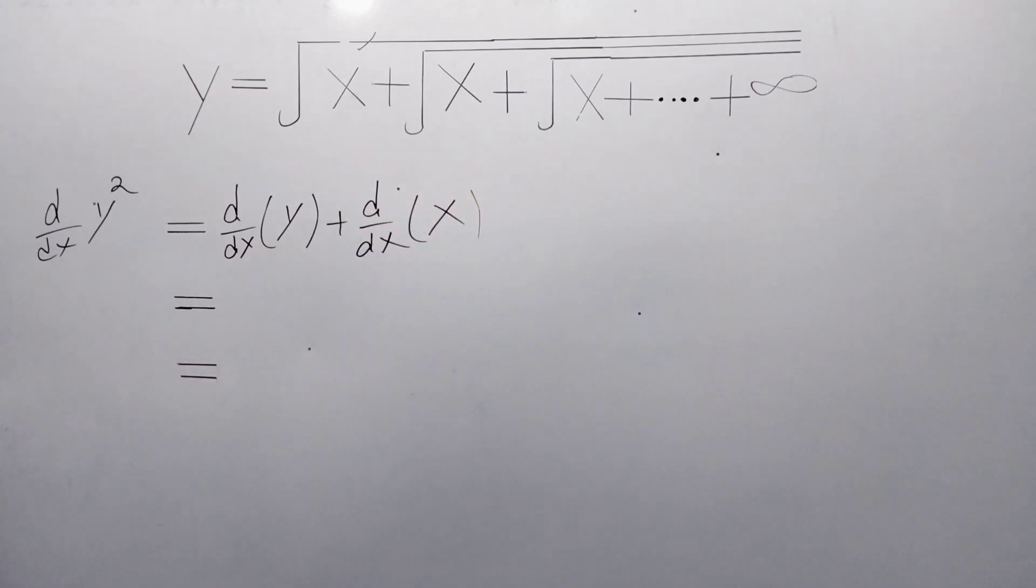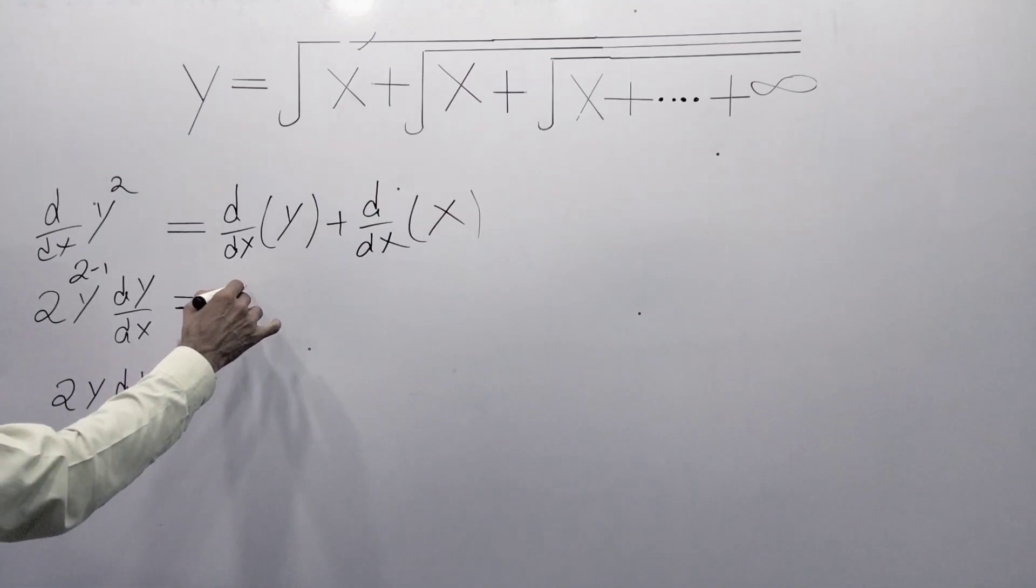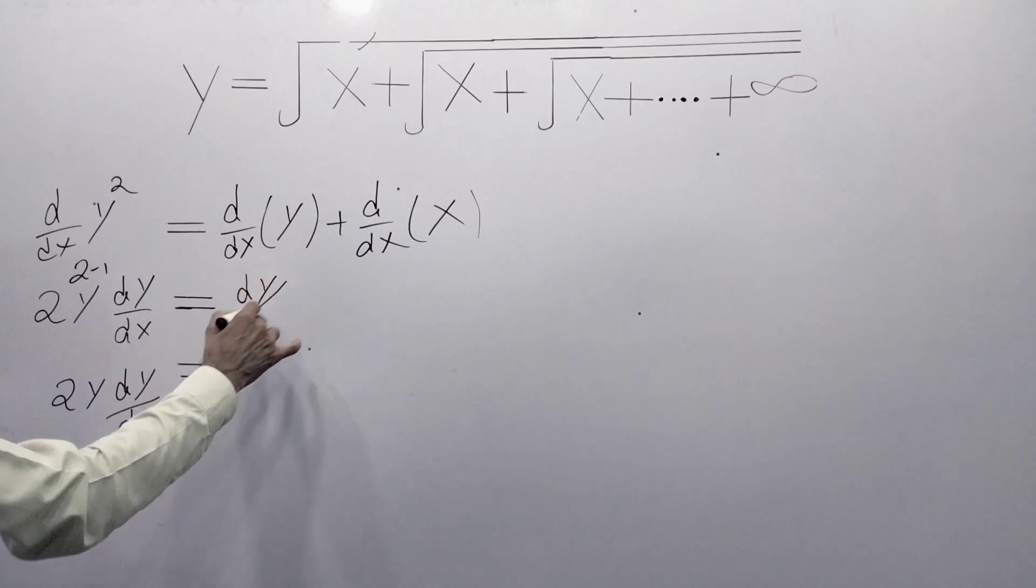Here we will use the power rule - that is, first of all write the power, then subtract one from the power, then multiply by the derivative. The derivative is dy over dx. It is equal to 2y times dy over dx. On the other side, the derivative of y is dy over dx.